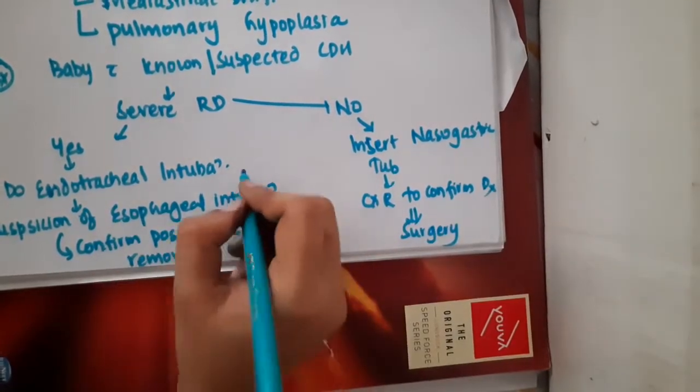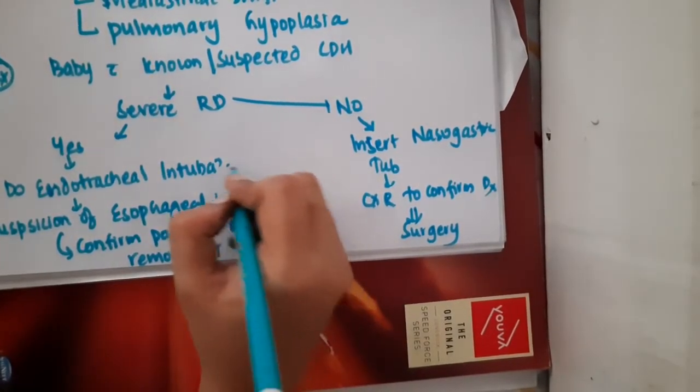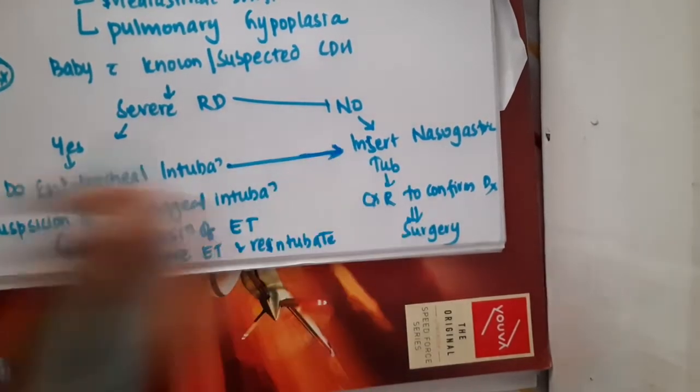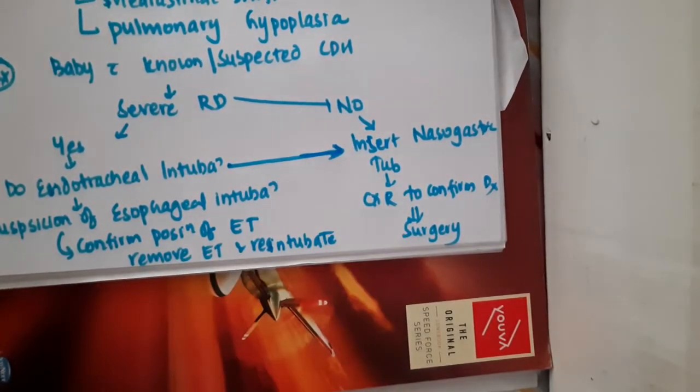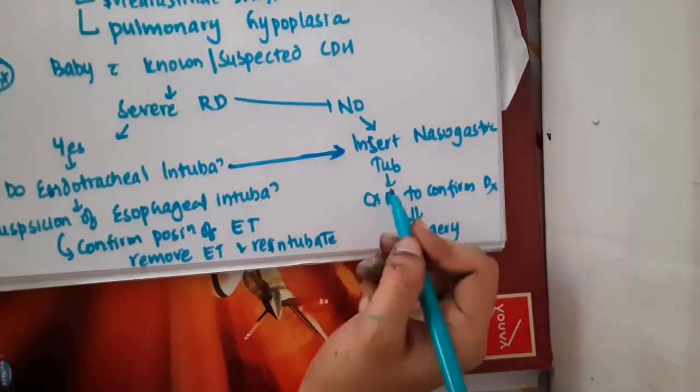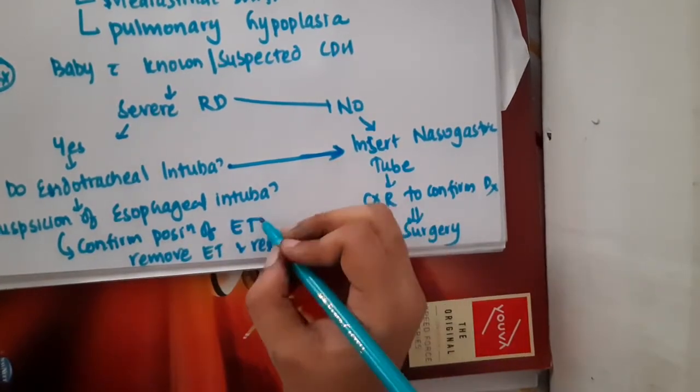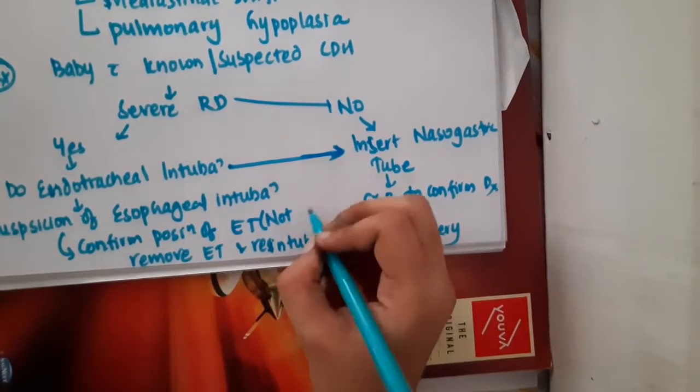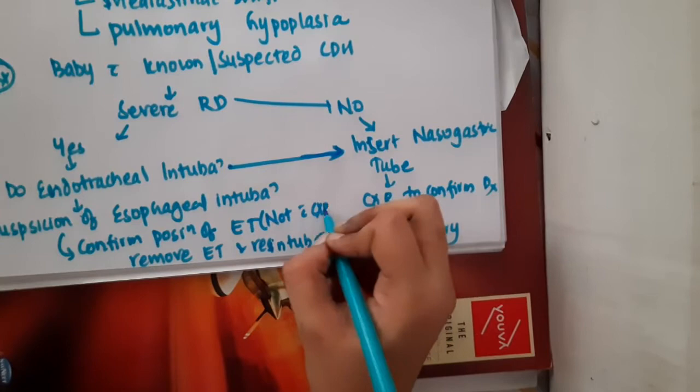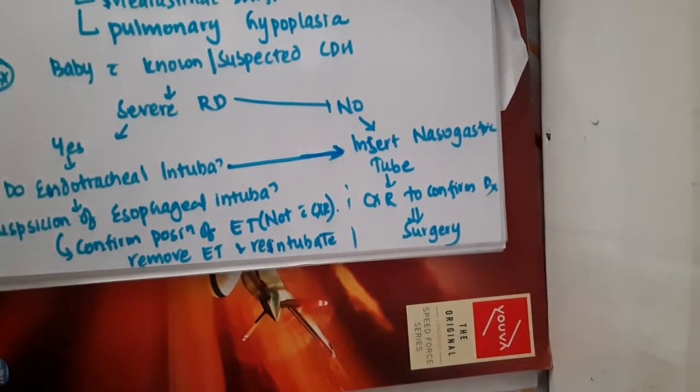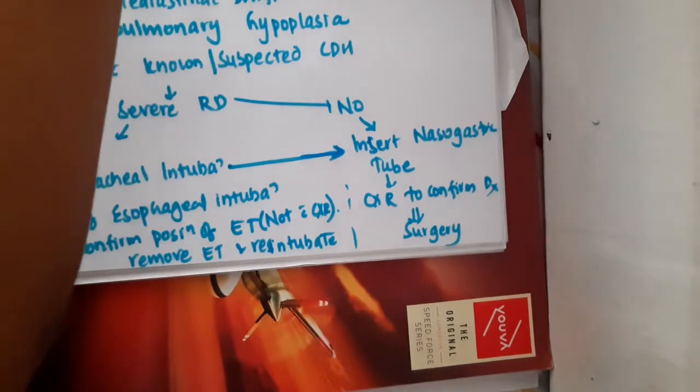After endotracheal intubation, when you are sure it went into the trachea, then insert the nasogastric tube and do chest X-ray. Confirmation of endotracheal tube is done manually, not with chest X-ray. This is the main treatment chart.